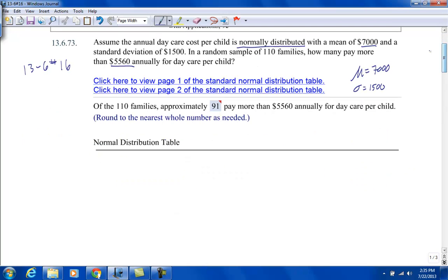So let's get a Z-score. The Z-score is going to be 5560 minus 7,000 divided by the standard deviation of 1,500.